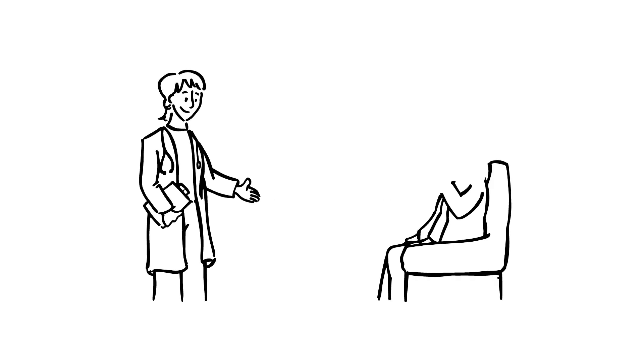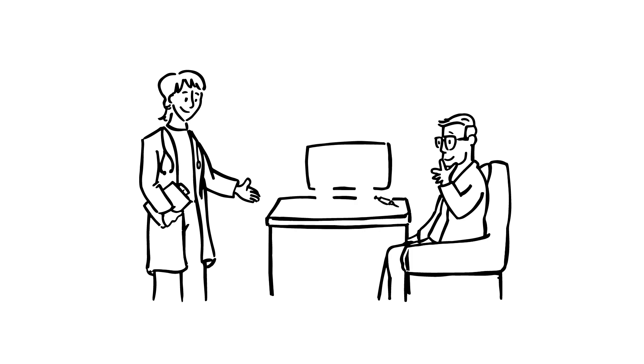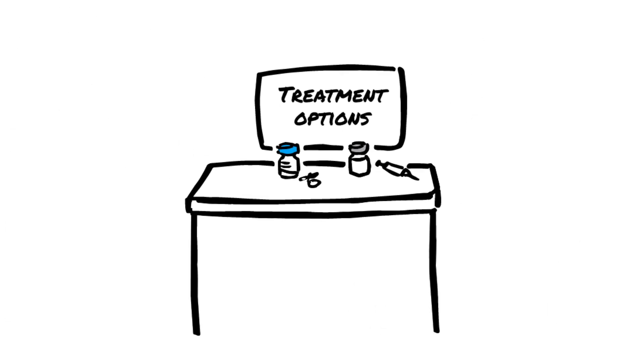Identifying the correct medication therapy for a chronic illness can be a lengthy trial-and-error process. When an effective treatment is identified, it's important that patients understand what kind of medication they are taking.